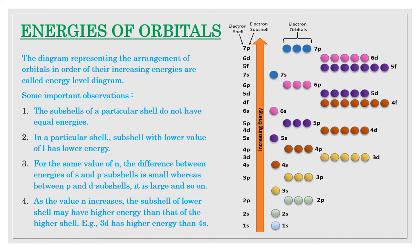From this energy level diagram for multi-electron atoms we can draw some important observations. The first observation is that the subshells of a particular shell do not have equal energies. For example, 2s and 2p both have principal quantum number 2, but they have different energies. 2s has lower energy than 2p.